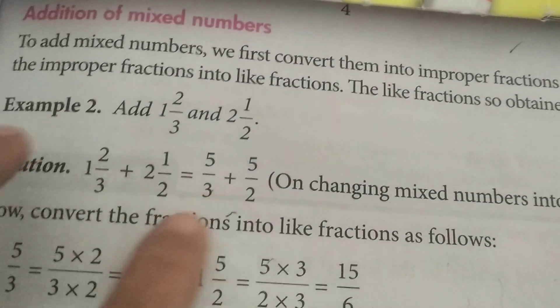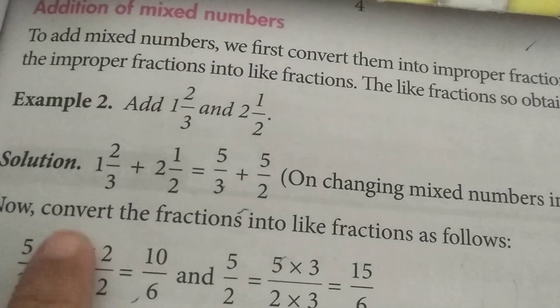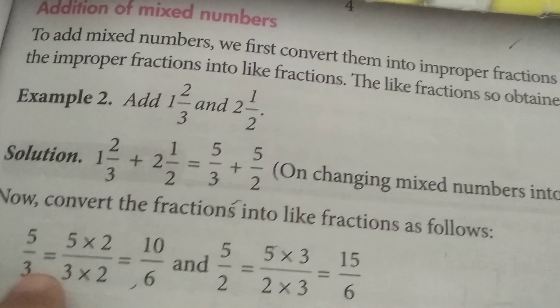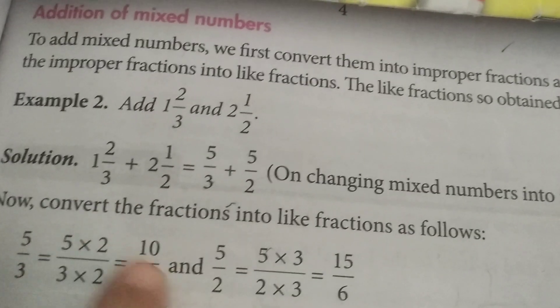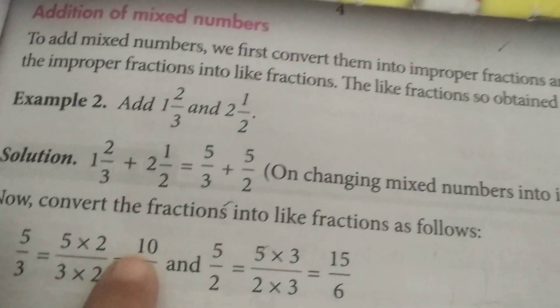So multiplying 3 by 2 is 6. We are multiplying both the numerator and denominator by 2. So 5/3 is equal to 5 times 2 divided by 3 times 2 is equal to 10/6.